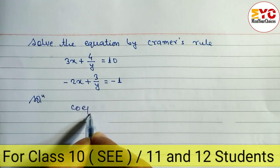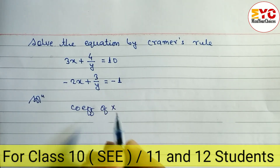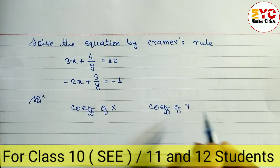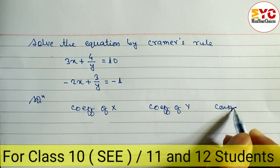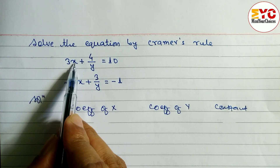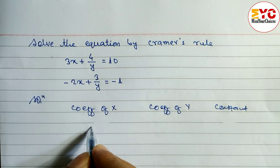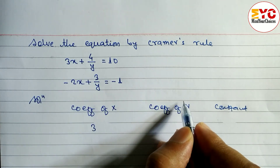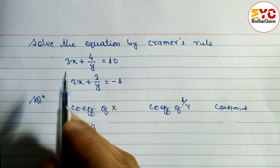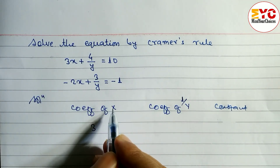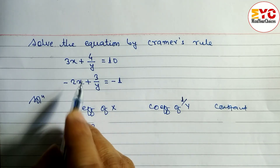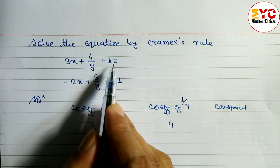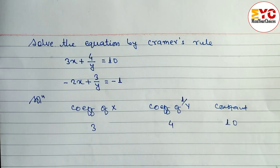Here we have to write the coefficient of x, then the coefficient of y, and the constant number. The coefficient of x is 3, so we write 3 here. You can see y is in the denominator, so we write the coefficient of 1 by y, which is 4. The constant number is 10, so we write 10 here.